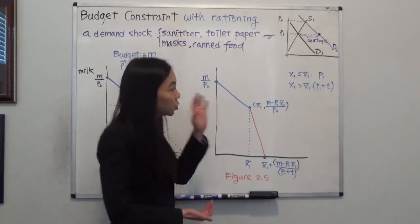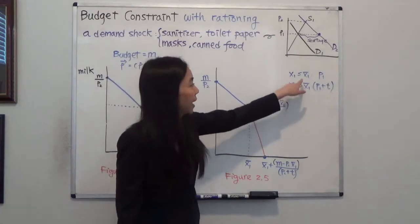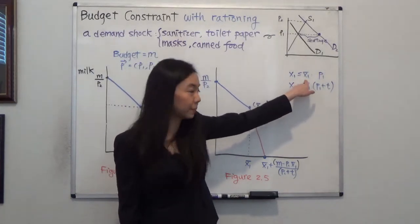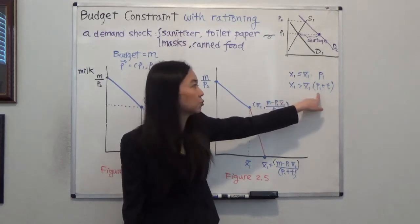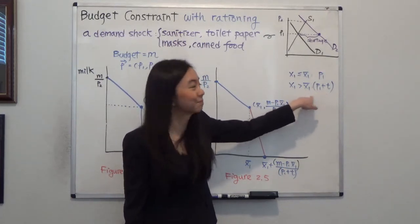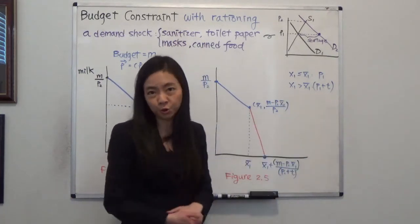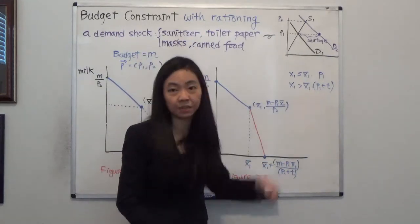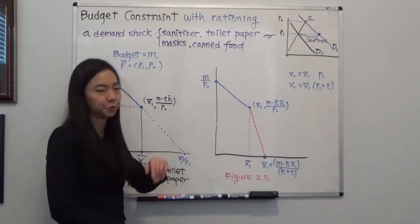So how much more? The new price after you buy x bar rows of toilet paper, you want to buy more, then the price will be P1 plus T dollars for each row of toilet paper. And sometimes the T can be a hundred dollars. So they did that in Europe.